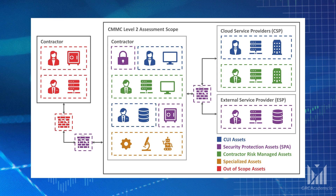This diagram is used to show where the CUI assets are and to differentiate between the other asset types. It is also used during scoping discussions with a third-party assessor and is included in the SSP. In this example, FCI is processed, stored, or transmitted on the CUI assets. In other words, we haven't put FCI assets into a separate assessment scope — the CUI assets also hold FCI.